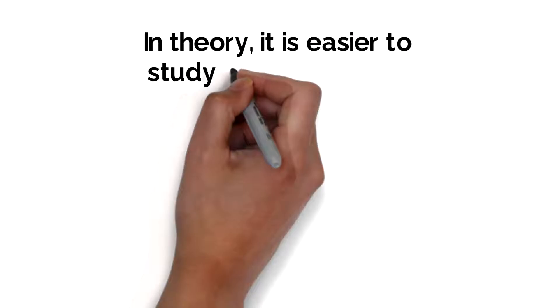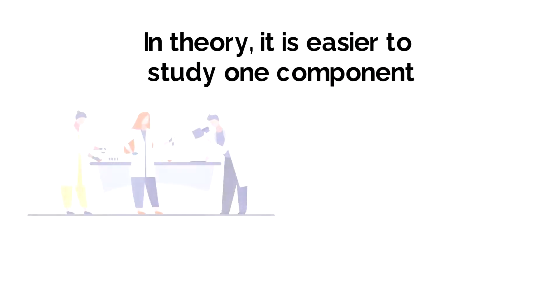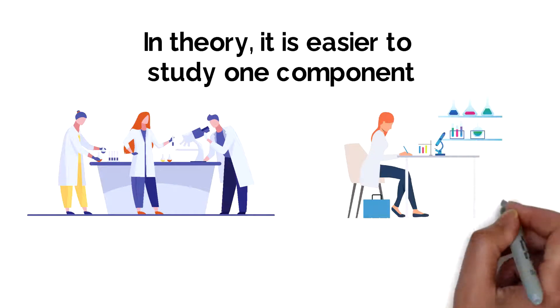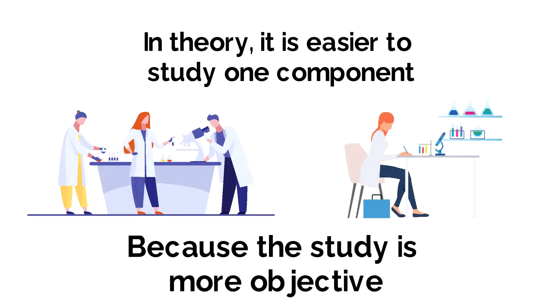Moreover, in theory, it is easier to study one component than several interacting components. If one component is isolated and others are controlled, then the study is more objective and scientifically acceptable.